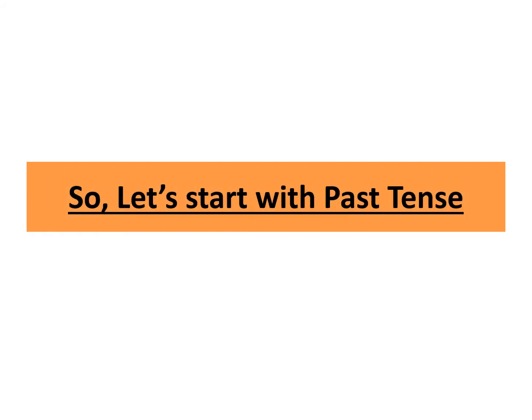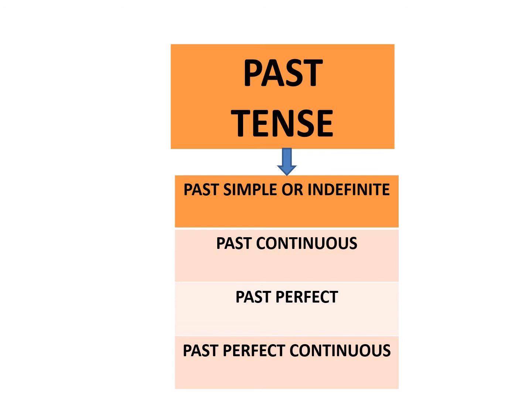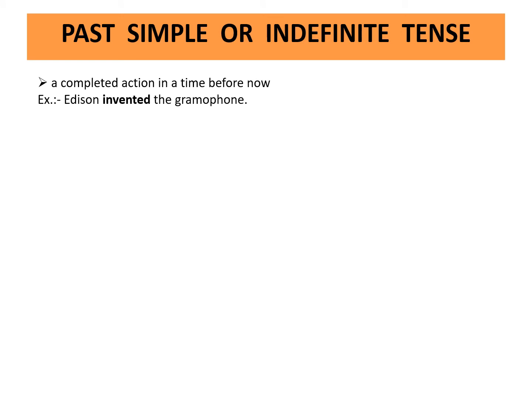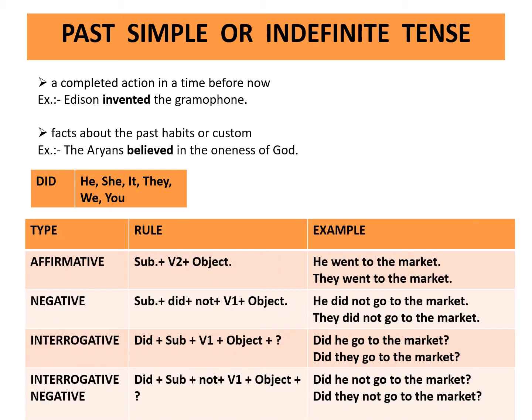So let's start with past tense. Past tense is subdivided into four aspects: past simple or indefinite, past continuous, past perfect, and past perfect continuous. Past simple or indefinite tense describes a completed action in the time before now. Example: Edison invented the gramophone. It also describes past habits or customs. Example: The Aryans believed in the oneness of God. Rule: subject plus second form of the verb plus object. Example: He went to the market. They went to the market.